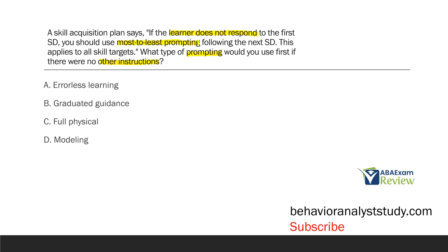The most amount of prompting is what? Sometimes people get a little confused on this because we tend to think of full physical as the most intrusive prompt. But really above that is what we would consider errorless learning. Errorless learning is really the truest form of most prompting, because with errorless learning you're preventing all errors from happening. Whatever you have to do to prevent the mistake, you do it — the biggest form of prompt you can give. So if we're going to use most to least prompting with no other instructions, we're going to start with errorless learning.